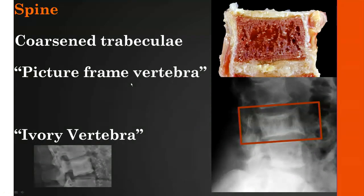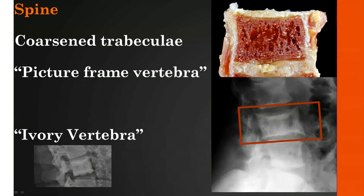In the spine, we have the same features of Paget's with cortical thickening, trabecular pattern coarsening, and expansion of the bone compared with adjacent vertebrae. This has been described as a picture frame appearance, seen here on the pathologic specimen. Over time, the whole vertebra can become white—otherwise known as an ivory vertebra—and we'll discuss the differential diagnosis of an ivory vertebra a little later.